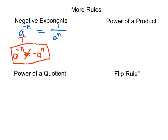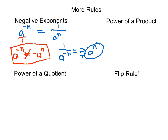Now suppose we had 1 over a to the negative n — what if we have the expression in the denominator? We want to make it positive; we never want to deal with negative exponents. So we take anything that has a negative exponent and move it to the other side of the fraction, giving us a to the n over 1, which is just a to the n. Once you move that expression to the other side, the exponent changes sign — it goes from negative to positive.